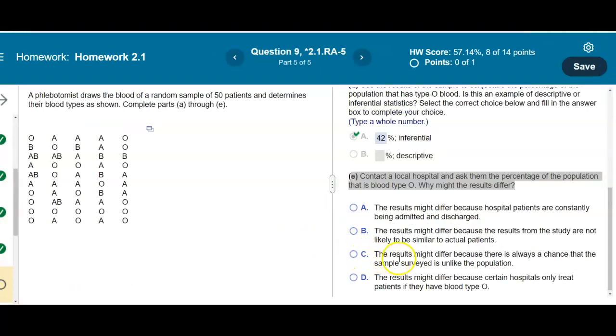So the answer is going to be C. The results might differ because there is always a chance that the sample surveyed is unlike the population.